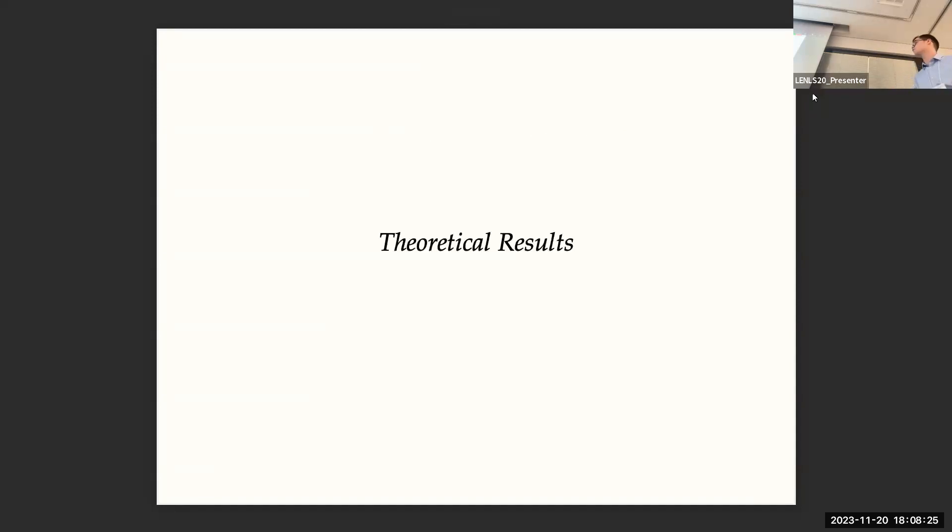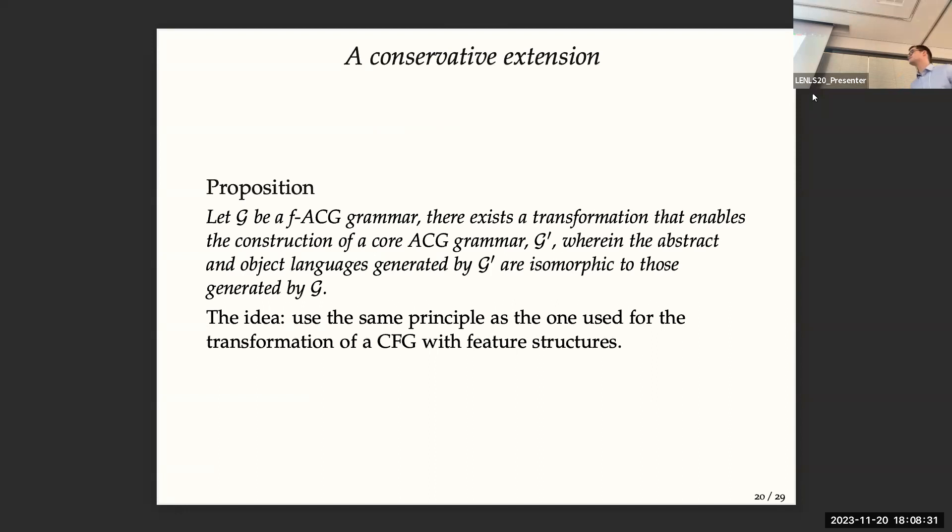Okay, so I will present some theoretical results about this extension. So basically, we can use the same principle as the one used for the transformation of a simple CFG with feature structures to a simple CFG by duplicating types, duplicating rules, et cetera. And we can always extract a simple ACG from this extension. So basically, we are not adding anything in terms of expressive power, but it's very useful for a linguist to develop very wide coverage grammars.